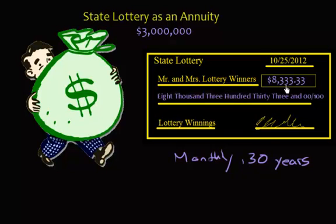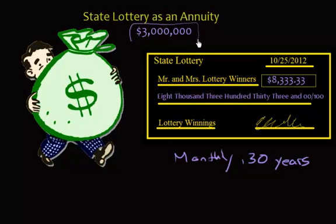That monthly payment is $8,333.33. Because if they gave you a lump sum of $3 million, it would cost the lottery $3 million. But they're smart about this — instead they invest money, and that's going to be the present value of this annuity. In the end it's all going to be worth $3 million, but up front, how much do they have to invest into some account or insurance policy so that you'll get your $3 million?